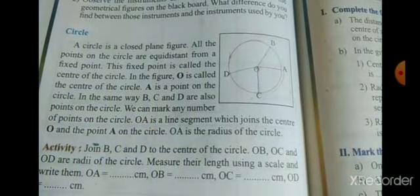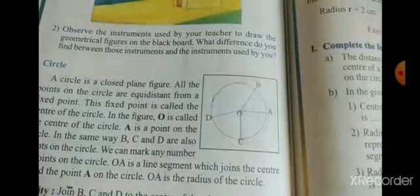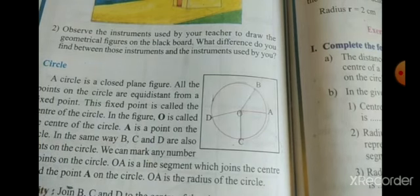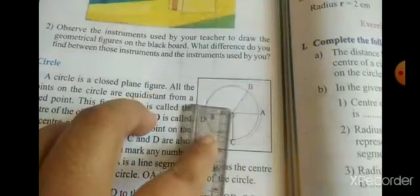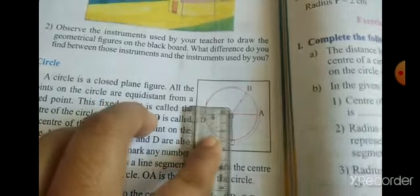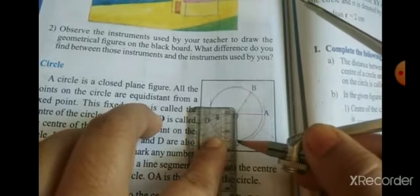So in the activity also they given, we measure it by the scale. How much? We measure it 1.5. OC is 1.5.